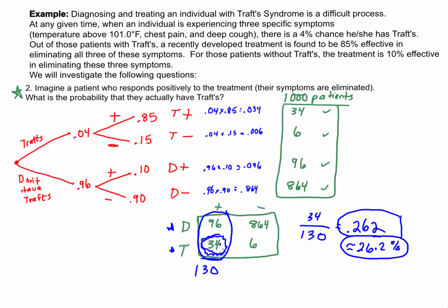This is a very popular application of conditional probability, and there's a famous theorem called Bayes' theorem — which we won't define in detail here — but we actually used the foundations of Bayes' theorem to answer this problem. These can be tricky problems, especially if you're just trying to jump to the answer. Drawing a probability tree, drawing a table, and breaking down the four categories will be significantly helpful as you go to complete these problems.